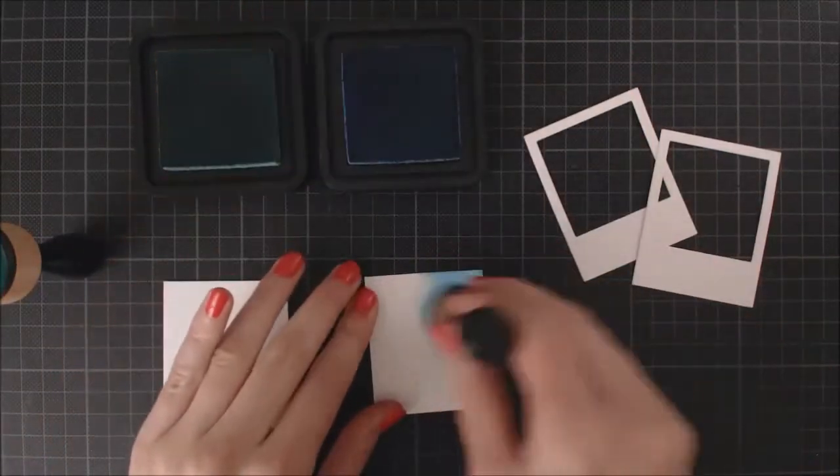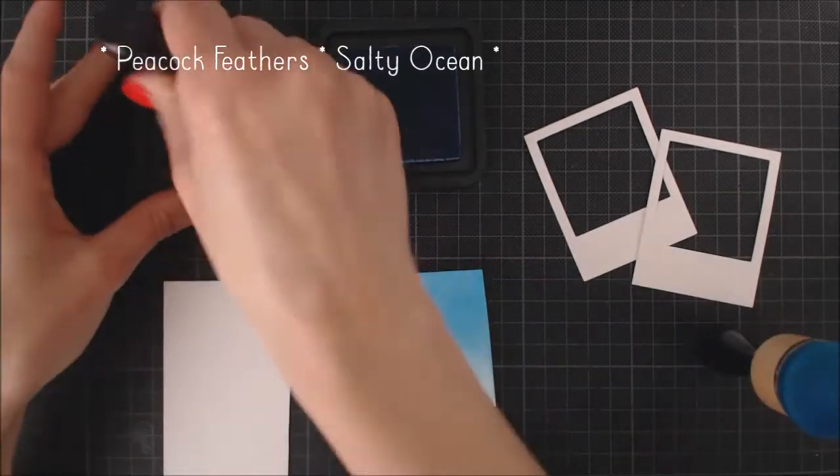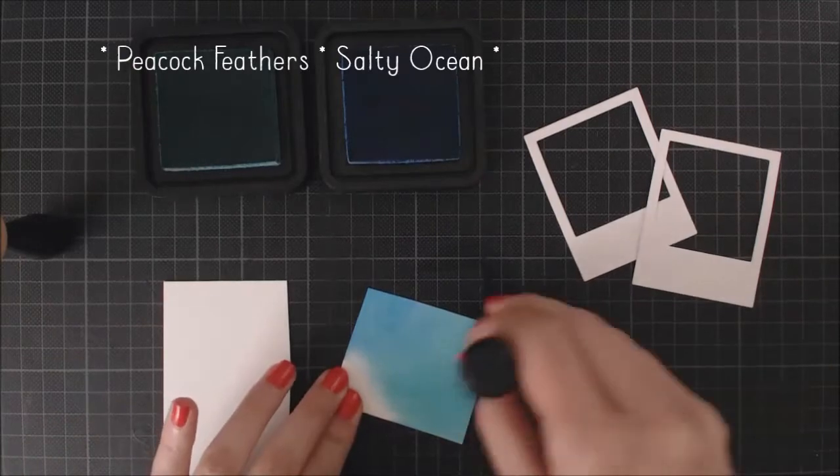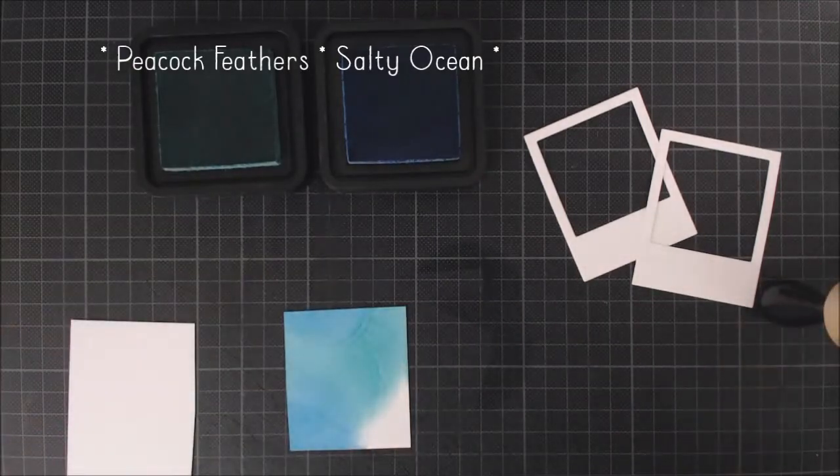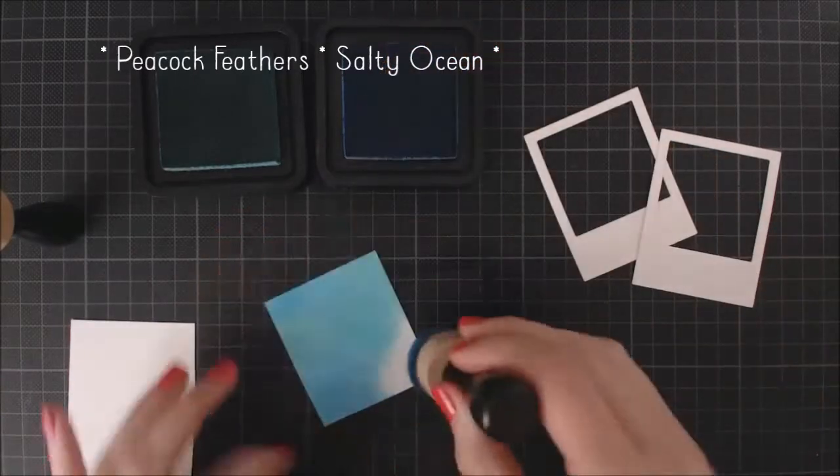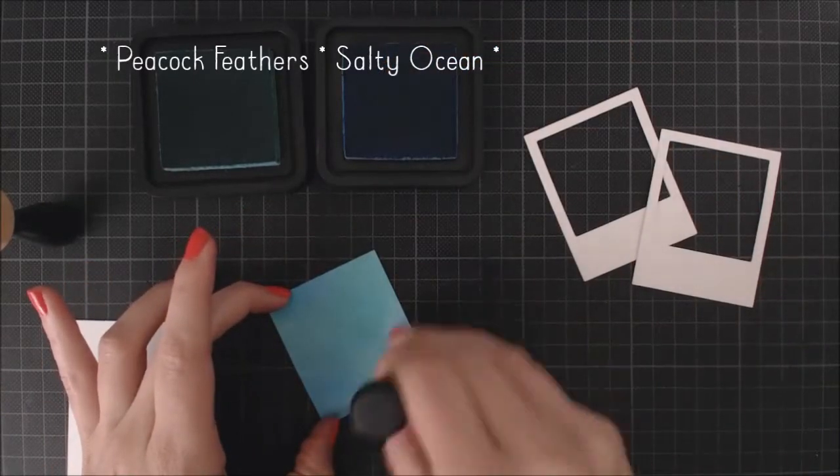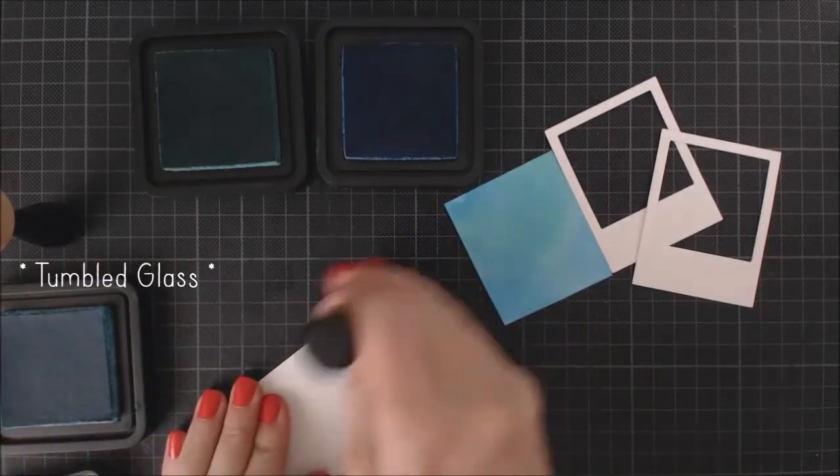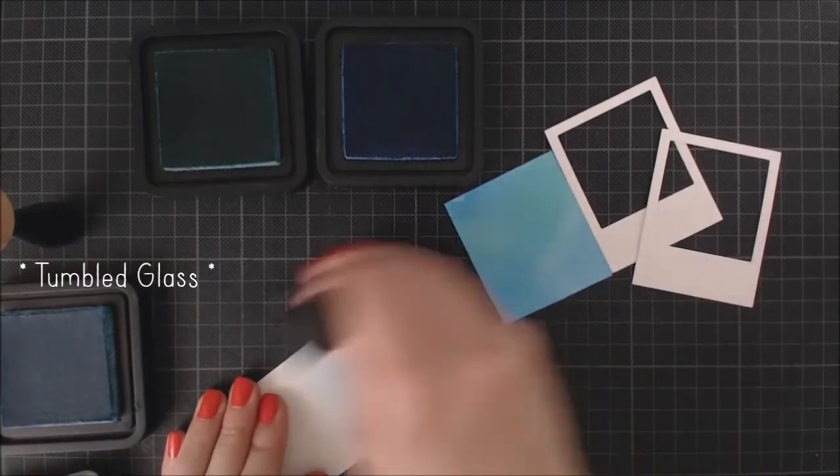I'm going to color my backgrounds very quickly using Peacock Feathers and Salty Ocean Distress Inks and also some Tumble Glass for the sky. So I've taken my blending tool and I'm using it to apply both colors and blend them together, trying to create the different shades of the ocean waters.